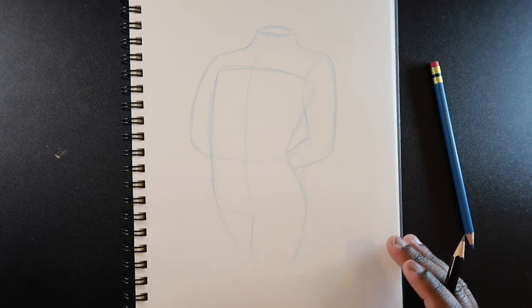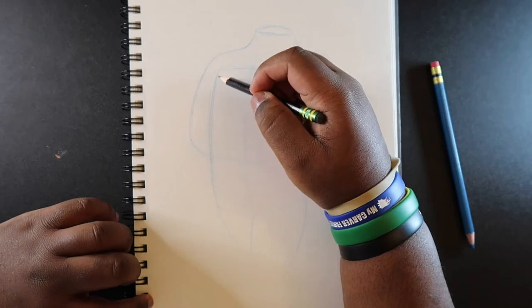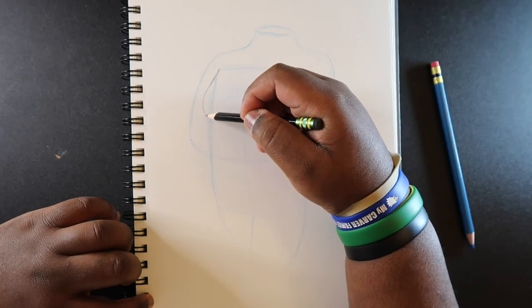And so now that we got that drawn, we're gonna start to draw the breasts which kind of start right up here in this top corner. So I'm just gonna come off and make sort of a water balloon shape.